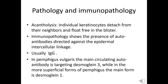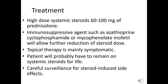In pemphigus vulgaris, the circulating autoantibody is directed towards desmoglein-3. In the more superficial variant, pemphigus foliaceus, the main antigen targeted by autoantibody is desmoglein-1. Treatment of pemphigus vulgaris includes high-dose systemic steroids, 50 to 100 mg per day of prednisolone, or immunosuppressive agents like azathioprine or cyclophosphamide.